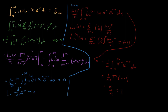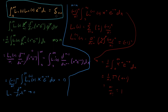We've proven the orthogonality relationship for Laguerre polynomials. When n is not equal to m, we get 0. When n is equal to m, we showed without too much work that you get 1. So the orthogonality relationship is fully established.